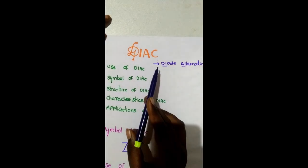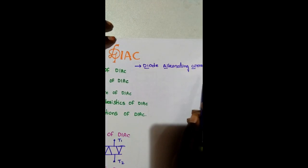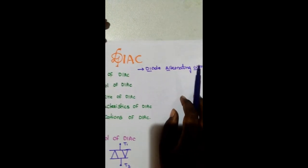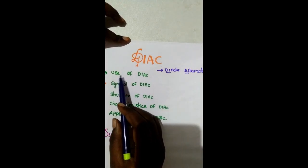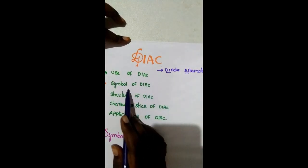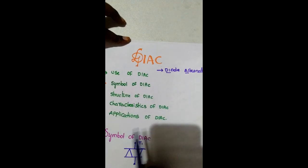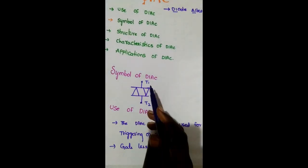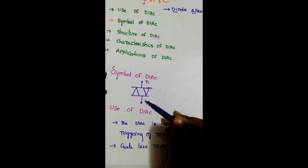Today we are going to discuss about DIAC — Diode Alternating Current — the diode which works on alternating current. The topics covered are: use of DIAC, symbol of DIAC, structure of DIAC, characteristics of DIAC, and applications of DIAC. The DIAC has two terminals, T1 and T2.